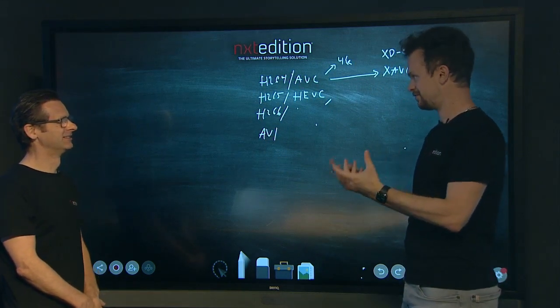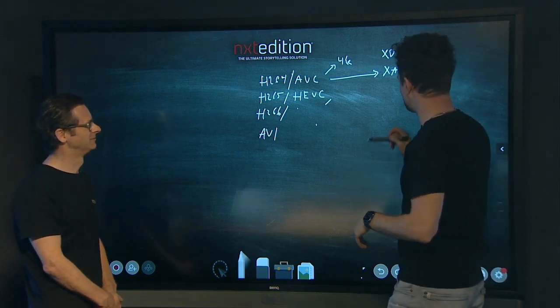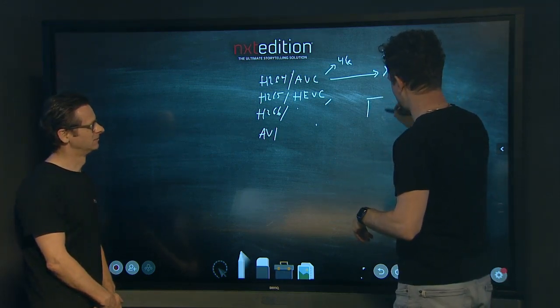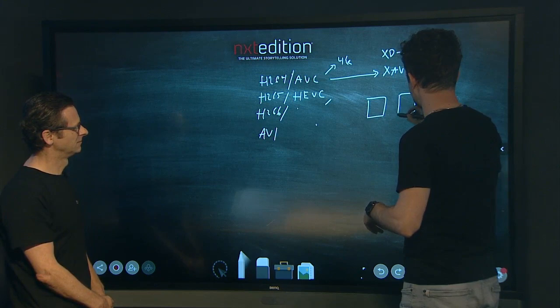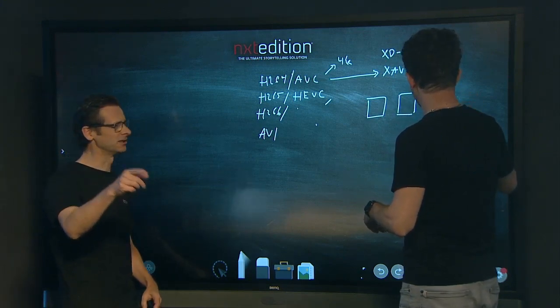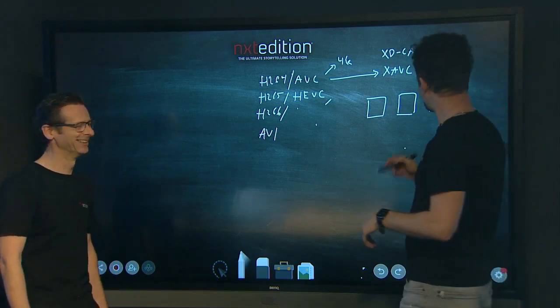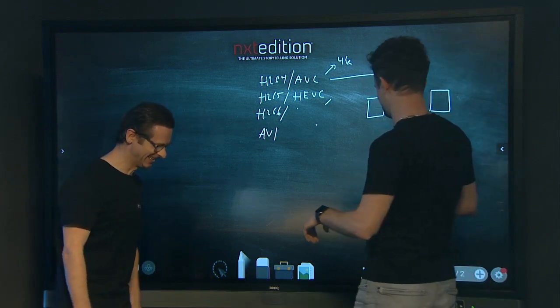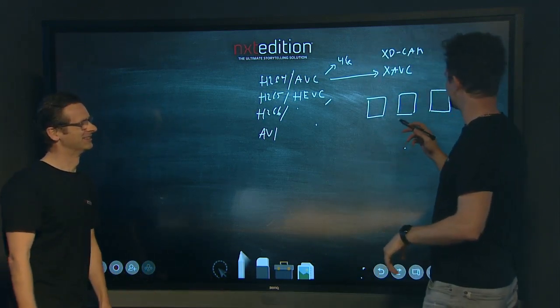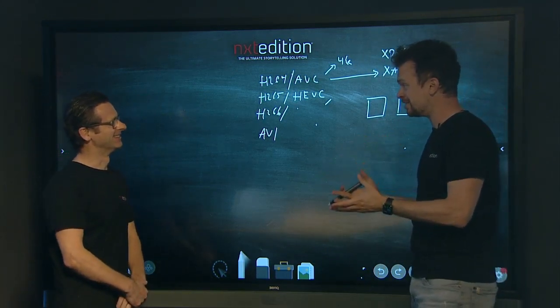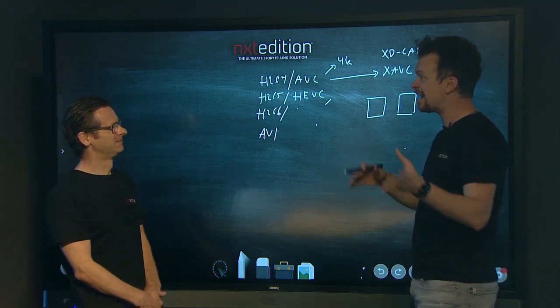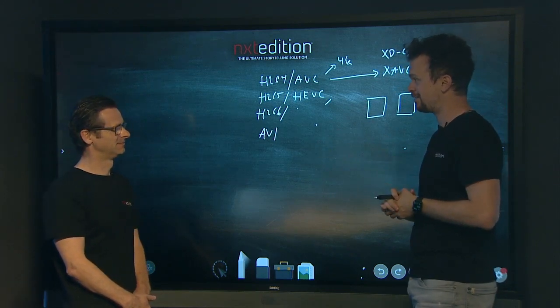Yeah. So then actually, these codecs are what we call interframe codecs. So basically a video is a number of frames, right? Yeah. Don't forget to look at the audience. Otherwise you're leaving them out. Yeah. Well, I'm going out of frame now. So yeah, you need to stand on your X. Yeah. I have my X here.